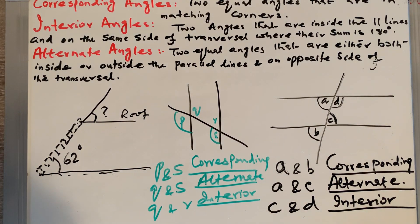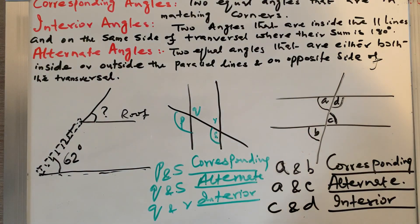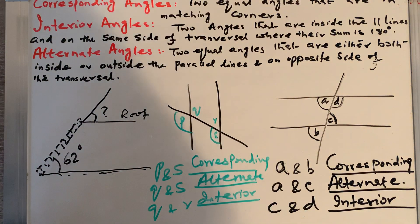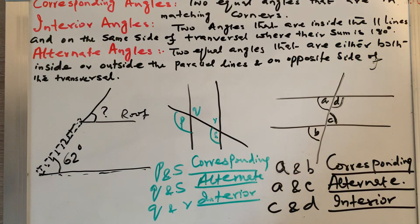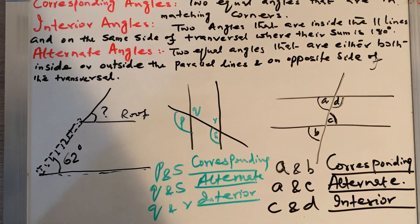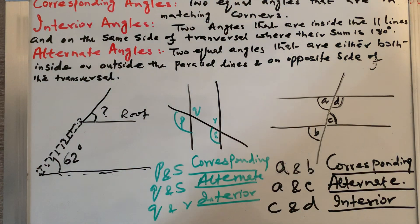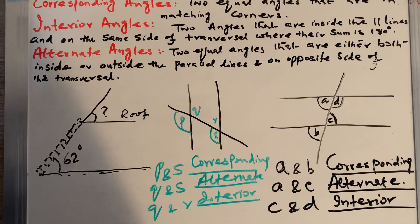So we learned today three angle definitions: corresponding angles, interior angles, and alternate angles. We looked at different diagrams and filled in the blanks to identify the relationship between different angles. P and S are corresponding, Q and S are alternate, and Q and R are interior angles. If you liked the video, subscribe to my channel, press the bell icon, like and share. Thank you for watching.